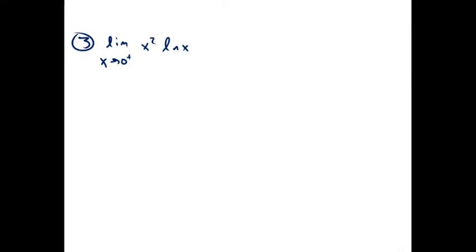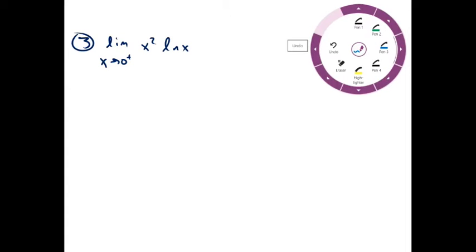Now evaluating as x approaches 0 from the right: x squared ln x. If we plug in 0 here, we get 0 squared times ln 0, which is negative infinity. So we get 0 times negative infinity, which doesn't mean anything.